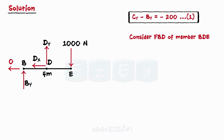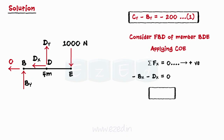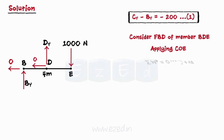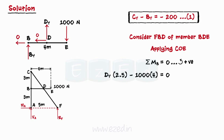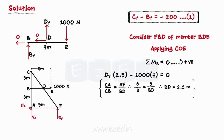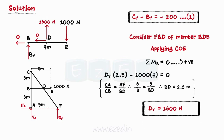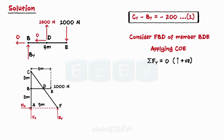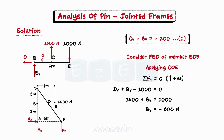Now consider the free body diagram of member BDE. Applying conditions of equilibrium: equating summation of forces in the x-direction to zero gives the x-component of pin reaction at D as zero. Then, equating the summation of moments about point B to zero — using similarity of triangles CAF and CBD to find BD equal to 2.5 meters — we get the y-component of pin reaction at D as 1600 N in the assumed direction. Equating forces in the y-direction to zero gives the y-component of pin reaction at B as 600 N, acting opposite to the assumed direction.